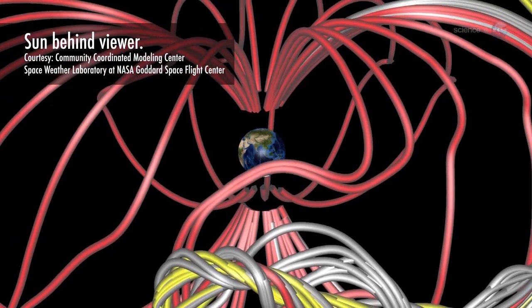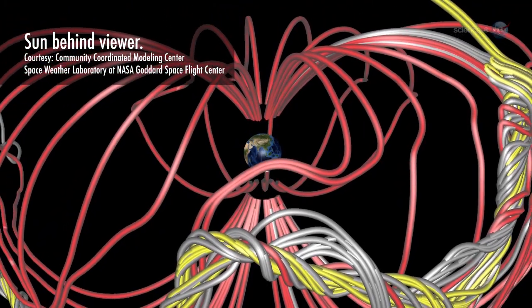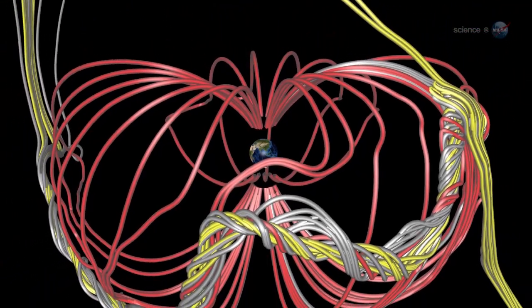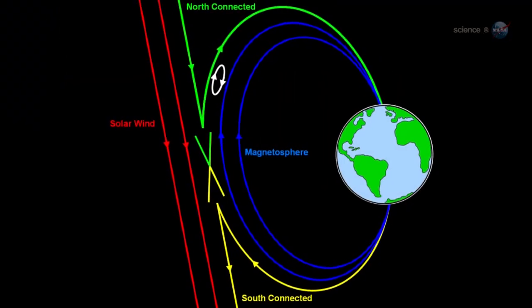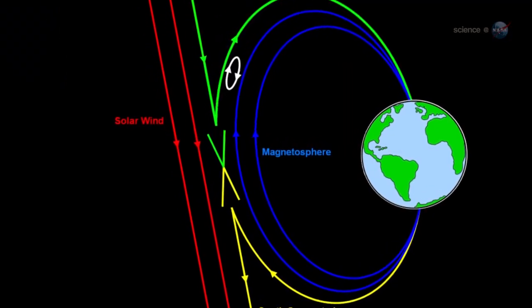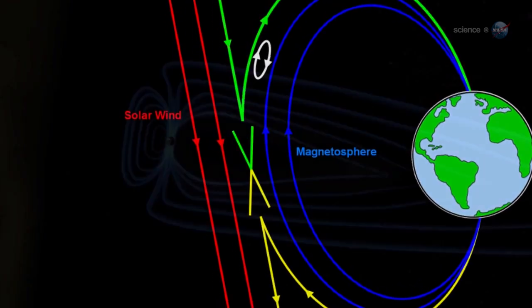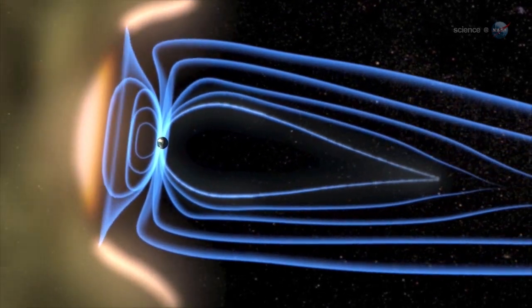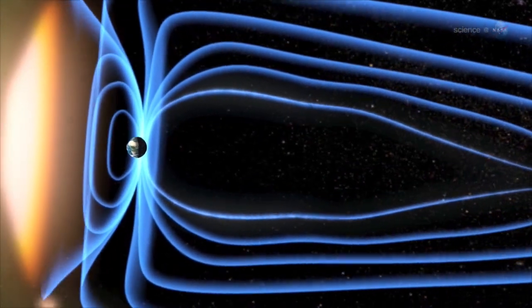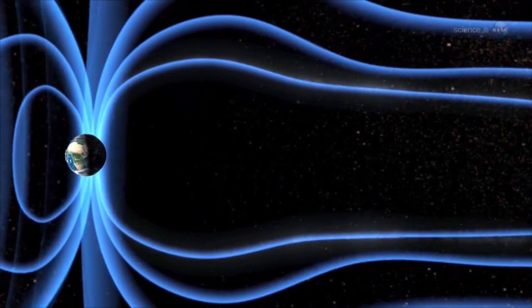Portals form via the process of magnetic reconnection. Mingling lines of magnetic force from the Sun and Earth crisscross and join to create the openings. X-points are where the crisscross takes place. The sudden joining of magnetic fields can propel jets of charged particles from the X-point, creating an electron-diffusion region.